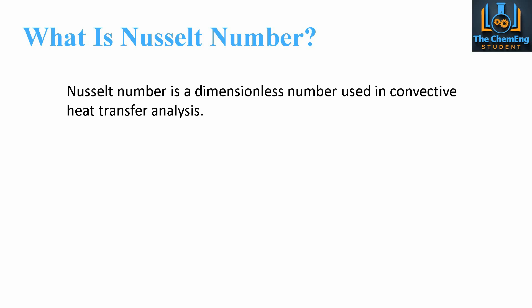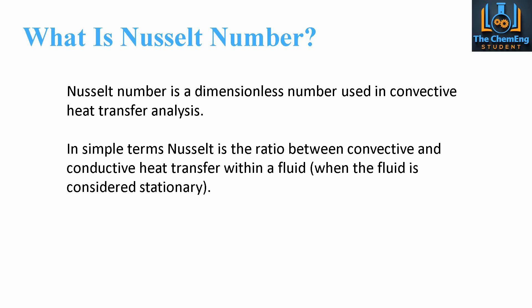So we first look at what Nusselt number actually is. Nusselt number forms part of a series of dimensionless numbers used in chemical engineering, but Nusselt number is used in convective heat transfer analysis. In simple terms, Nusselt number is essentially the ratio between the convective and conductive heat transfer within a fluid. We can assume that our fluid is considered stationary. That's key and we'll talk about that when we look at the conditions for what Nusselt number values actually mean.